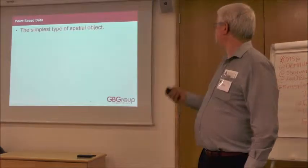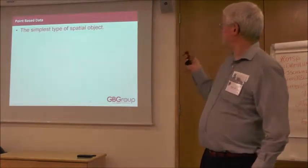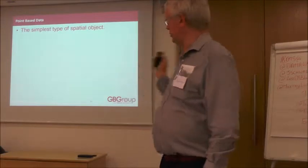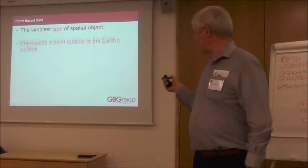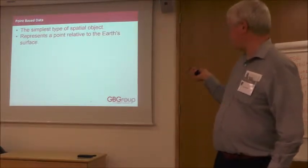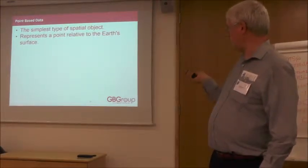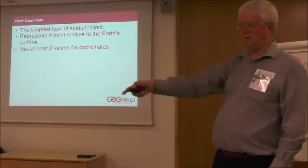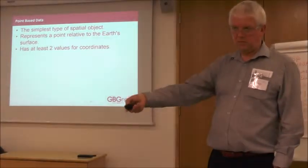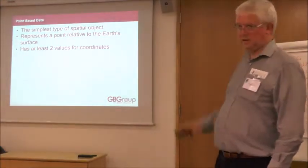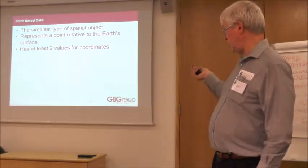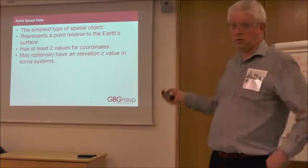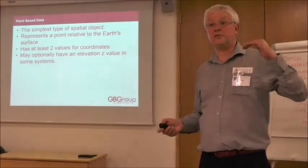Point-based data represents a point relative to the Earth's surface. In the kind of data we deal with it usually has two coordinates, although in some OS data it has three because it includes altitude. Ordnance Survey grid references are Cartesian coordinates — the XY coordinates — with an arbitrary origin just off the Isles of Scilly at 0,0; it's metres north and metres east of that origin point.